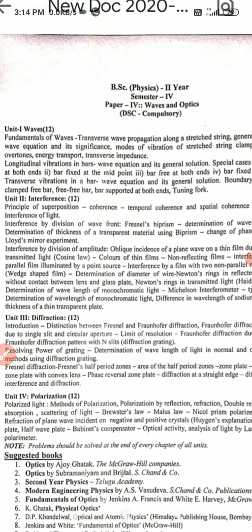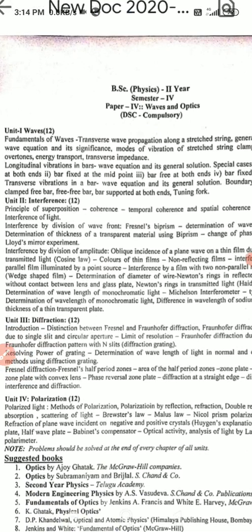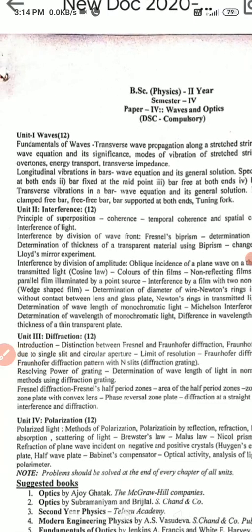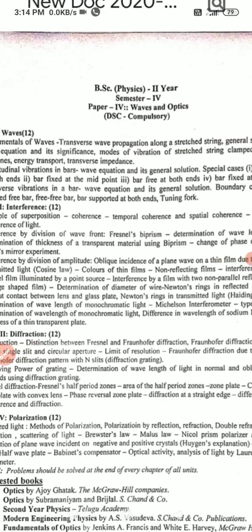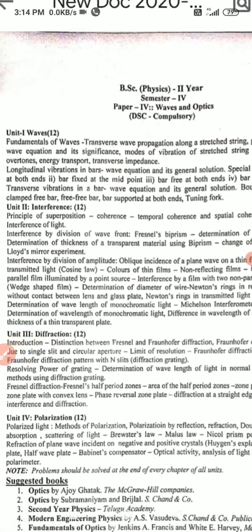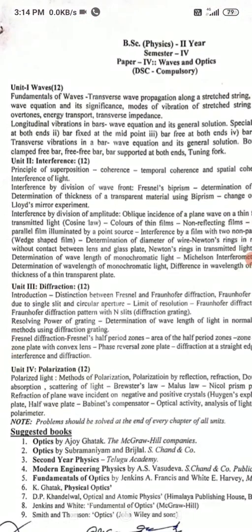In the second part of the first unit we have longitudinal vibrations in bars. In the first part we have fundamentals of waves — transverse wave propagation along a stretched string, general solution of wave equation and its significance, and modes of vibration of stretched string clamped at ends. In the second part, longitudinal vibrations of bars, we have the wave equation and its general solution.